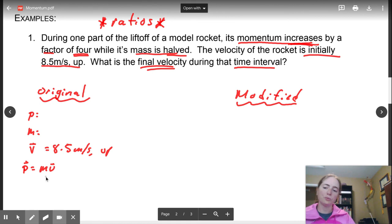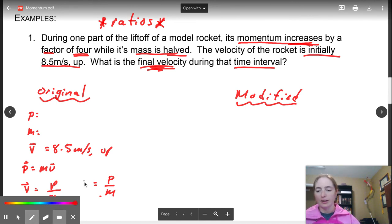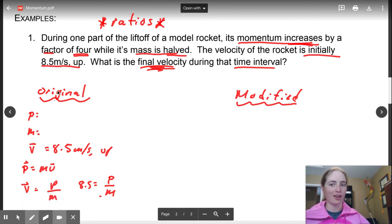So originally we have momentum. Originally we have mass, but we don't know what they are yet. They're just P and M. But we do have our initial velocity of 8.5 meters per second up. We also have our equation of P equals MV. So we're trying to find our final velocity. Let's rearrange this. Velocity is going to equal P over M. We know that our momentum is P, mass is M, we have our final V.